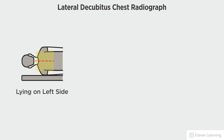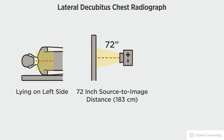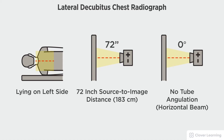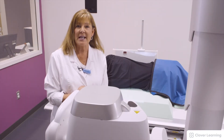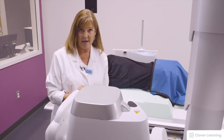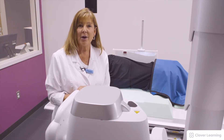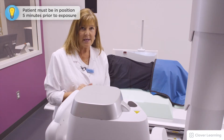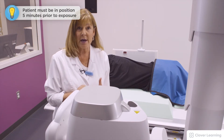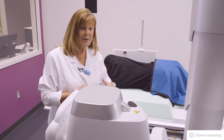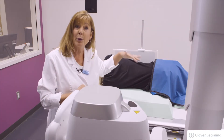In this view we will be demonstrating the lateral decubitus chest. The patient should be lying on their left side, or as dictated by pathological conditions, with a 72-inch source to image distance and a horizontal beam with no tube angulation. This is to show air and fluid levels. Your patient needs to be on their side five minutes prior to taking the exposure so that the air can rise and the fluid will fall.